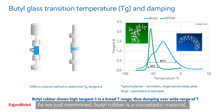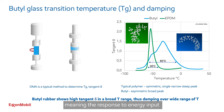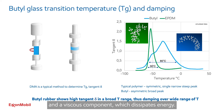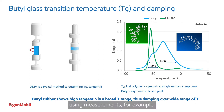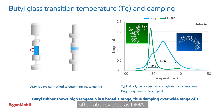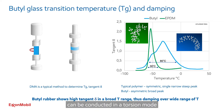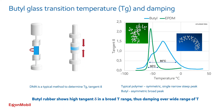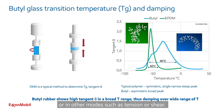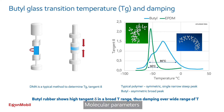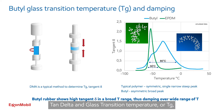As we just mentioned, Butyl Rubber is a viscoelastic material, meaning the response to energy input has an elastic component which stores the energy and a viscous component which dissipates energy. The viscoelastic properties of polymers are commonly analyzed using measurements from, for example, a dynamic mechanical analyzer, often abbreviated as DMA. The DMA analysis can be conducted in a torsion mode and in a compression mode, or in other modes such as tension or shear. Molecular parameters such as storage modulus, loss modulus, tan delta, and glass transition temperature, or Tg, are typically probed using this method.